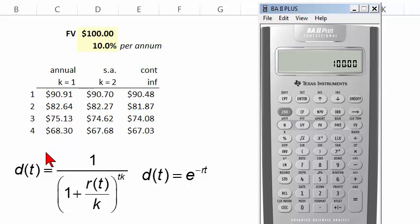So that's basically discounting under discrete compound frequencies and also under continuous. Thank you.